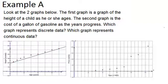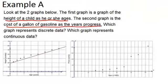In example A, it says, look at the two graphs below. The first graph is the graph of the height of a child as he or she ages. The second graph is the cost of a gallon of gasoline as the years progress. Which graph represents discrete data and which graph represents continuous data?